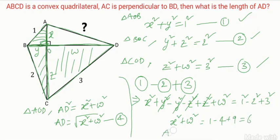So I want AD. AD is equal to root of X square plus W square, will give you root 6. So the length of AD is root 6. The answer is root 6. I hope you understand this question.